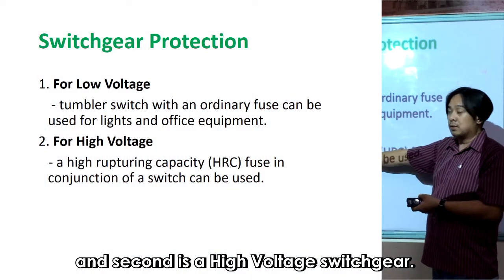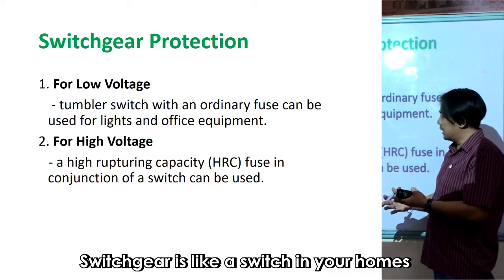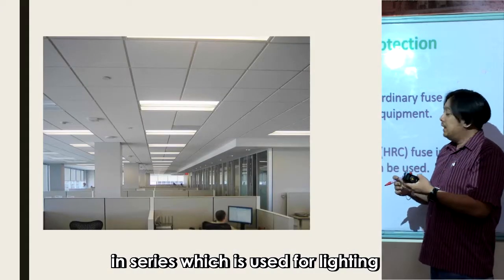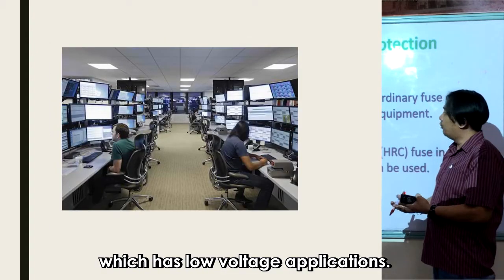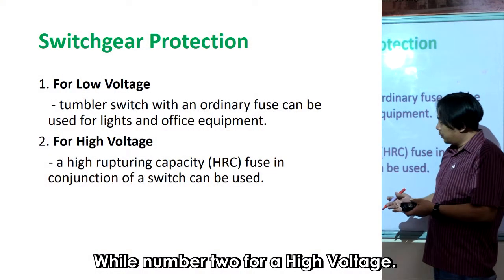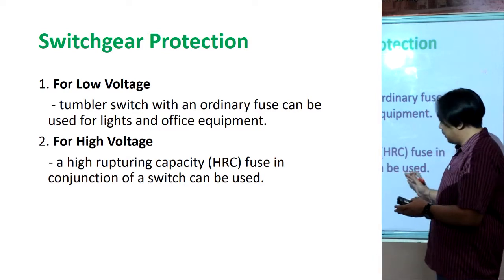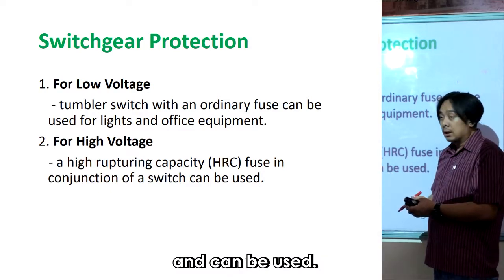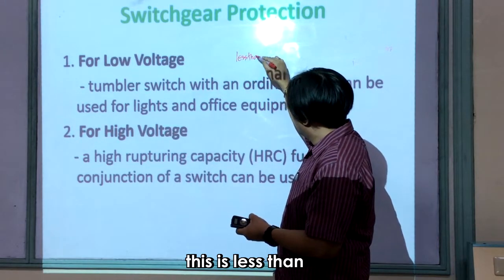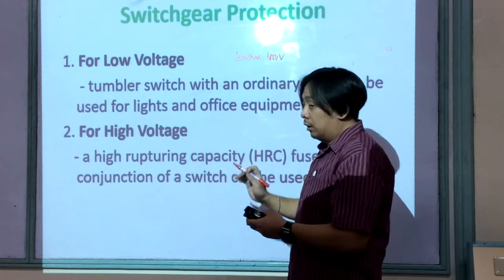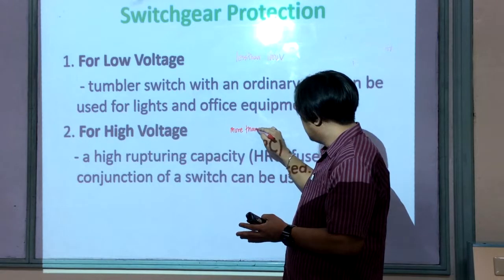The first type is a low voltage switchgear and the second is a high voltage switchgear. Low voltage switchgear is like a switch in your home — you have a tumbler and an ordinary fuse in series, used for lighting and other office equipment with low voltage applications. High voltage switchgear uses a high rupture capacity fuse. For low voltage, the application is less than 1,000 volts, while for high voltage, it is more than 1,000 volts.